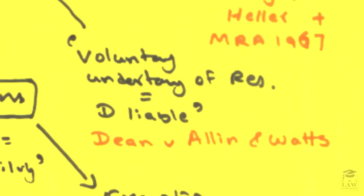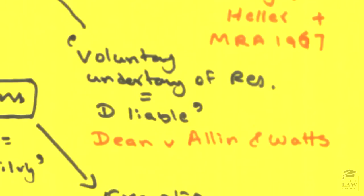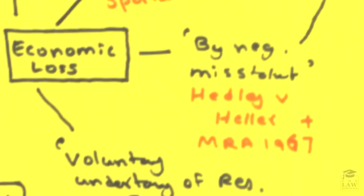One of the famous cases and now sort of looked after by the Misrepresentation Act of 1967 is Hedley Byrne v Heller. The economic loss caused here was by a negligent misstatement. However, there was no liability imposed because there were extenuating circumstances.